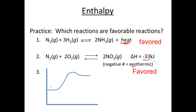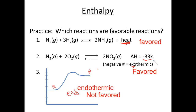Diagram number three shows an endothermic reaction, where our reactants have less energy than our products, so energy is going in. Endothermic reactions are not favored. So enthalpy is our first part.